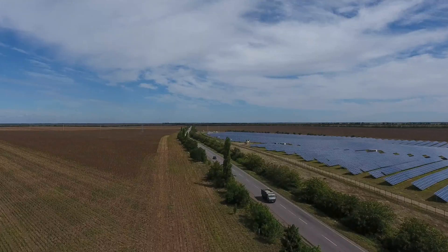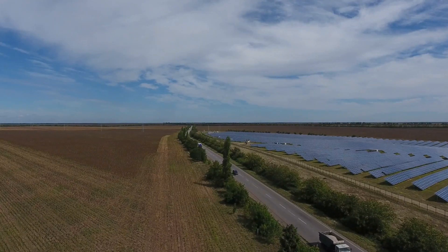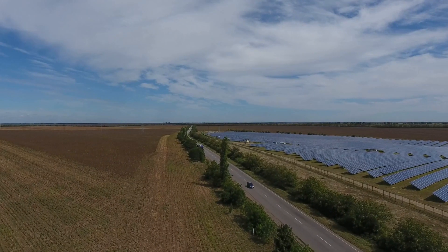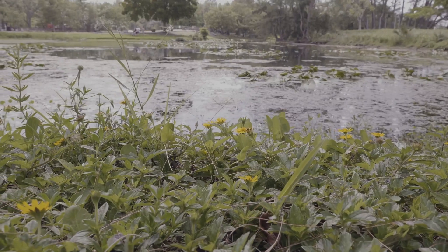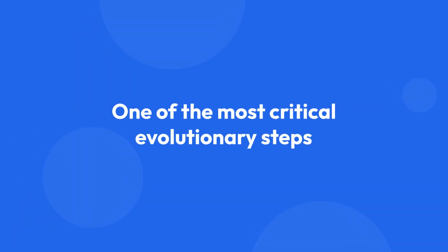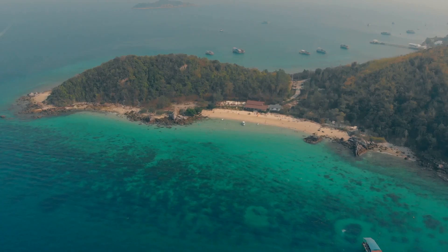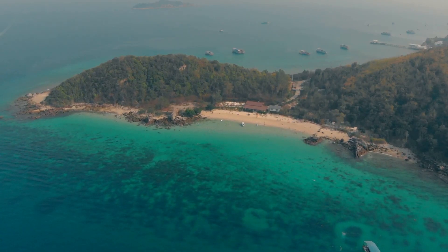The evolution of photosynthesis enabled the increase in the complexity of life and allowed for the diversification of the biosphere. It is one of the most critical evolutionary steps that created the current atmospheric structure of the Earth, making the development of terrestrial life possible.